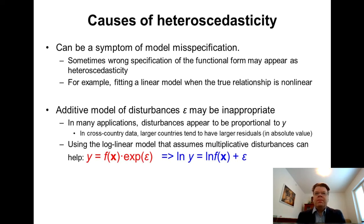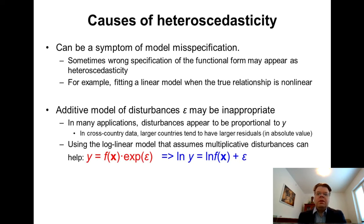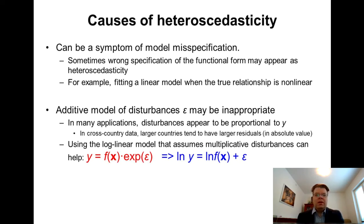Sometimes, for example, if you have a wrong functional form — for example, you are fitting a linear model but actually the true relationship between X and Y variables is nonlinear — then this kind of functional form misspecification might appear as if it is heteroscedasticity, while in fact it's more a question of model misspecification.